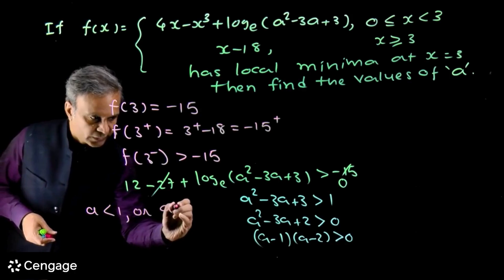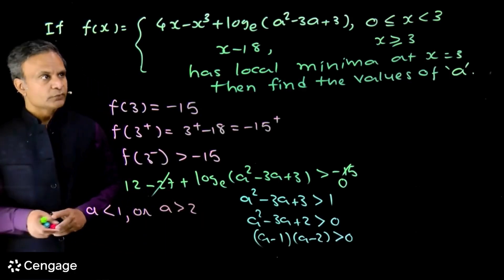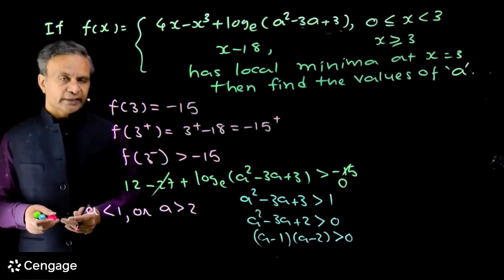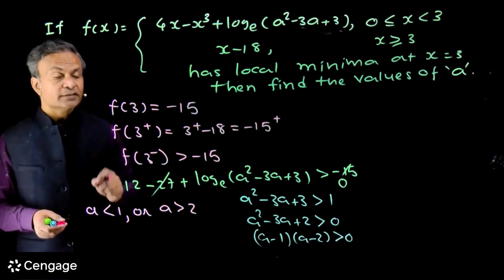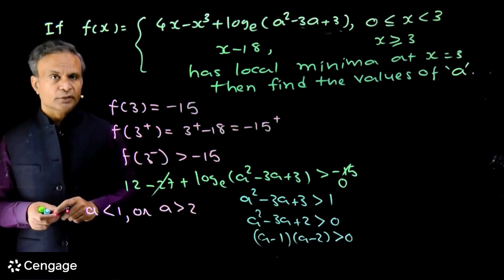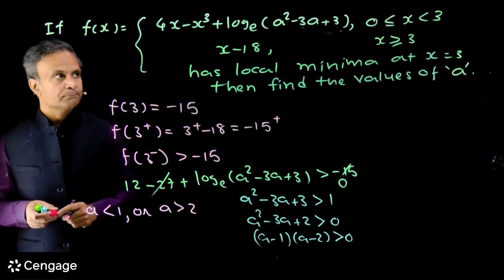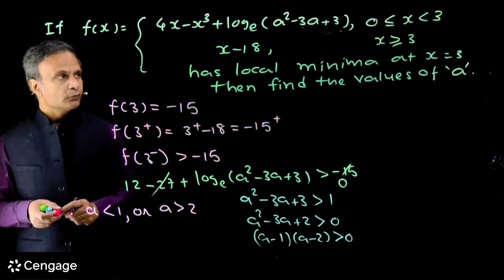From (a−1)(a−2) > 0, we get a < 1 or a > 2.